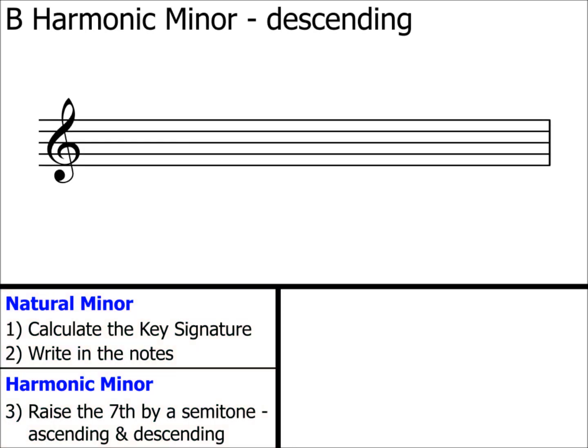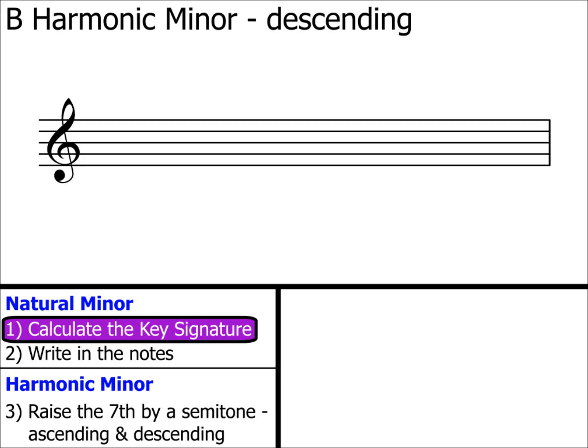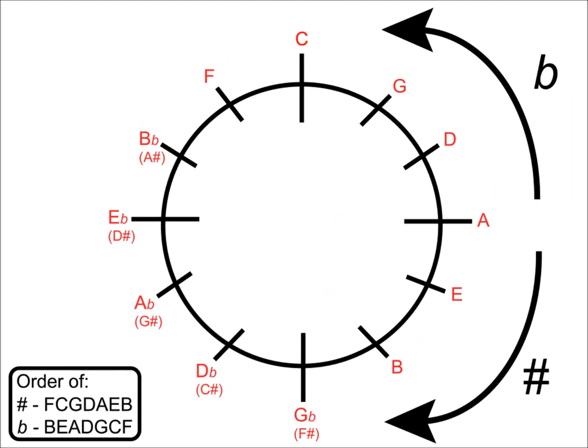Let's try B harmonic minor descending. Step one: calculate the key signature. Let's look at our circle of fifths. Here's the B. We start counting from the A — two steps on the sharp side of the clock takes us to B. Therefore, B minor has two sharps in its key signature. We look at the order of sharps — the first two letters are F and C, so these are the notes which will make up our key signature.